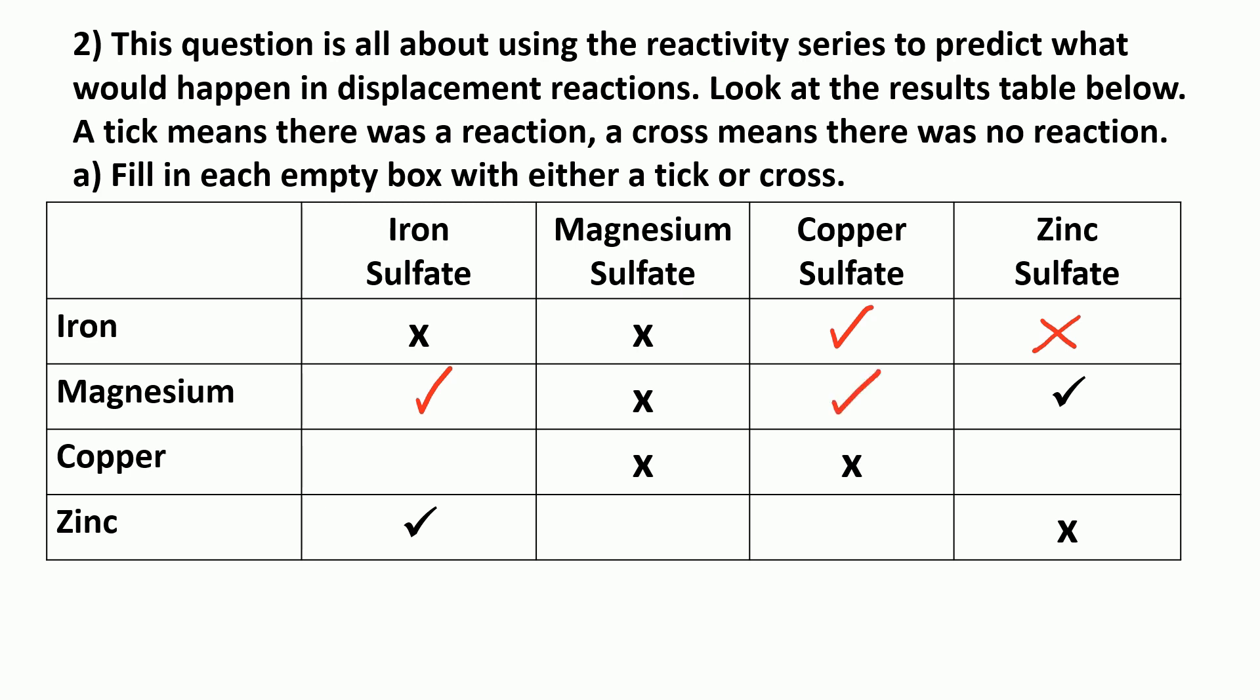Copper and iron sulfate. Well, copper is less reactive than iron, so it cannot displace iron, so there would be no reaction. And copper is also less reactive than zinc, so it won't displace zinc.